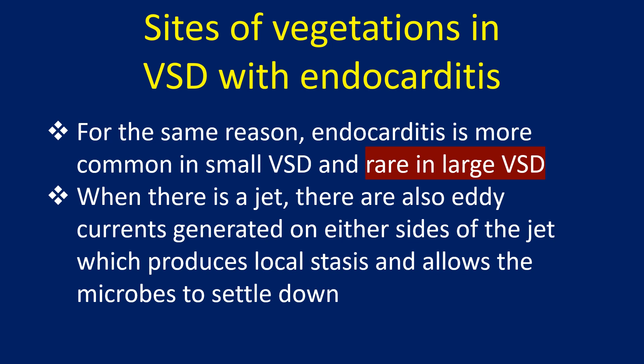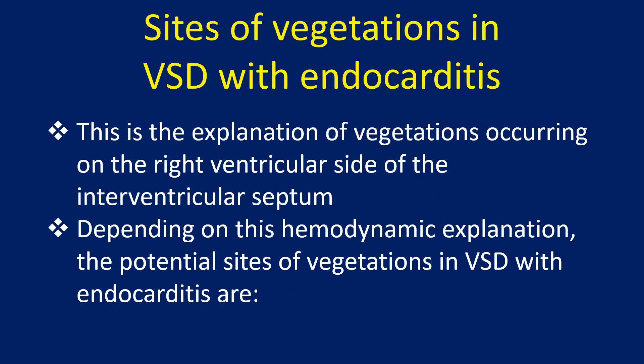When there is a jet, eddy currents are also generated on either side of the jet, which produces local stasis and allows the microbes to settle down. This is the explanation for vegetations occurring on the right ventricular side of the interventricular septum.